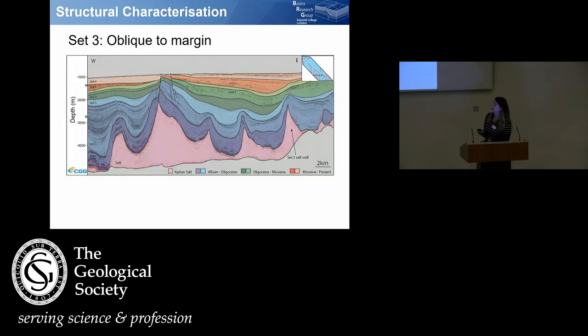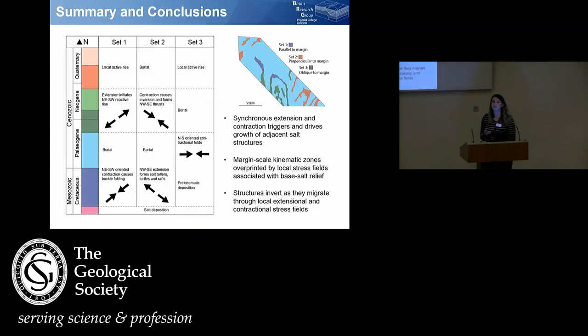And then our final set is even more enigmatic than the first two, because the first layer is hardly deformed at all in terms of its thickness. This was pre-kinematic, this first unit. And then these salt walls have developed very rapidly during the deposition of the lighter blue units, hence why we have these very thick sediment packages there. It's a completely different structural evolution from the first two sets that we saw.